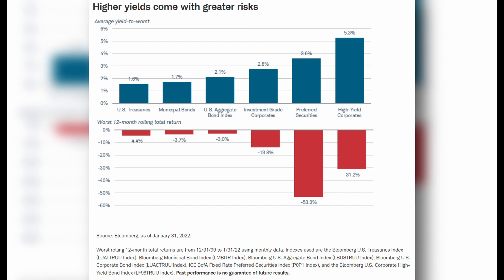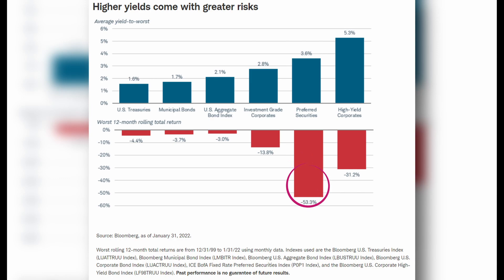See this chart from Bloomberg showing that some higher-yielding investments come with greater risk. This chart shows various income investments from U.S. treasuries at the left to high yield corporates at the right. The blue bars represent the average yield to worst, and the red bar below is the corresponding worst 12-month rolling total return for that investment. The higher-yielding investments had lower total returns from 12-31-1999 to 1-31-22, with preferred securities notching the lowest at negative 53.3%. By focusing solely on income, a high-yield strategy might pigeonhole you into certain investments, whereas a total return approach could have growth stocks, dividend stocks, exchange-traded funds, bonds, or alternatives like real estate.